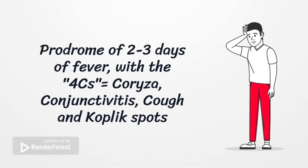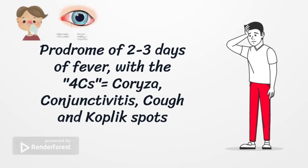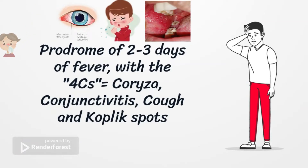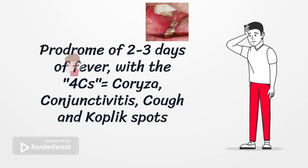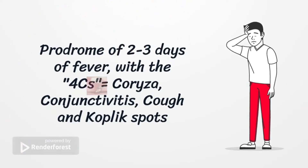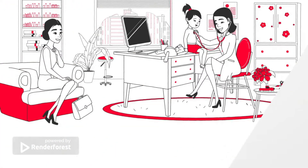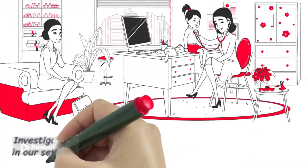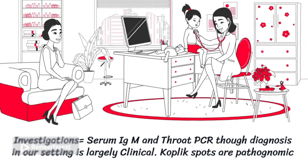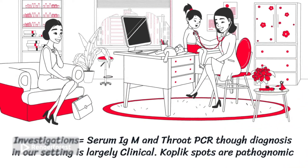Although the last C is a K and not really a C, you have coryza, conjunctivitis, cough, and Koplik spots, which are white spots on the buccal mucosa. Investigations include serum IgM as well as a throat swab for PCR, but largely in our setting the diagnosis is mainly clinical. Koplik spots are the pathognomonic feature of measles.